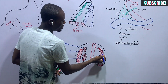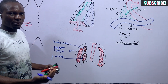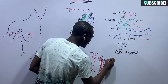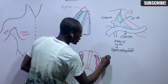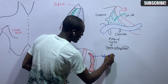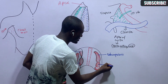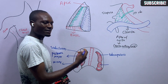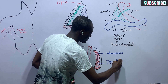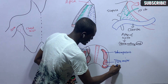The posterior wall of the axilla is formed by three muscles. The first is the subscapularis. The intermediate muscle is the teres major. And the third is the latissimus dorsi.